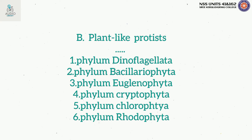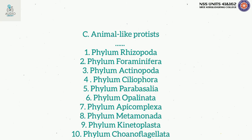The third category is Animal-like Protists. The phyla under Animal-like Protists are Rhizopoda, Foraminifera, Actinopoda, Ciliophora — which is important — Parabacillia, Opalina, Apicomplexa also known as Sporozoa — also important — Metamonida, Kinetoplastida, and Choanoflagellata.